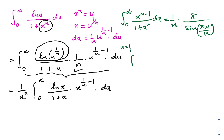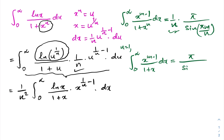Setting n equal to 1, the integral from 0 to infinity of x to the m minus 1 over 1 plus x, dx equals pi over sin of pi m. Now I am going to differentiate both sides with respect to m.